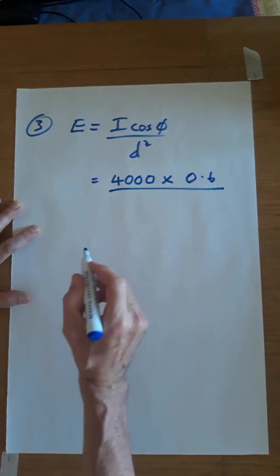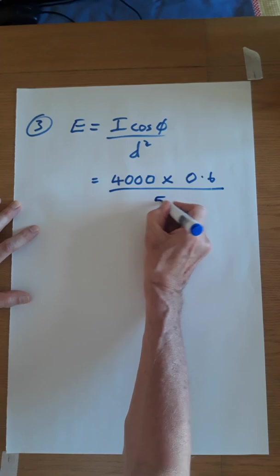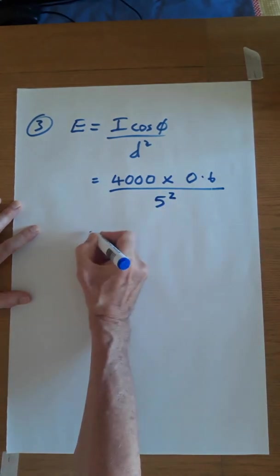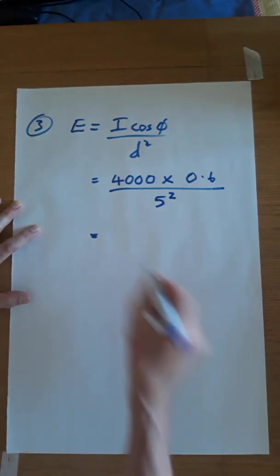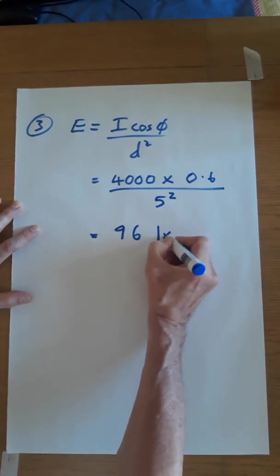Divided by the distance the light travels, and that's 5 squared. If you put that into your calculator, you should come up with 96 lux.